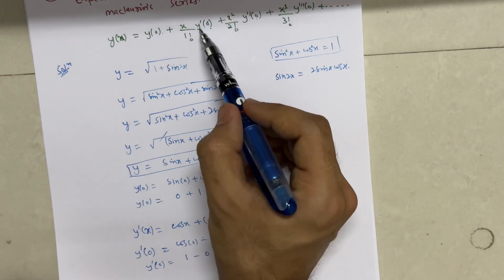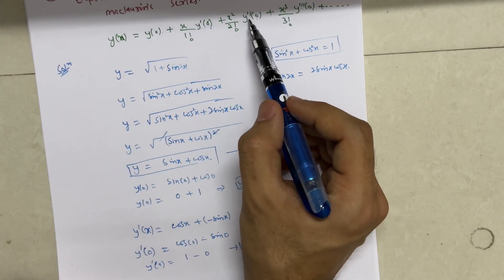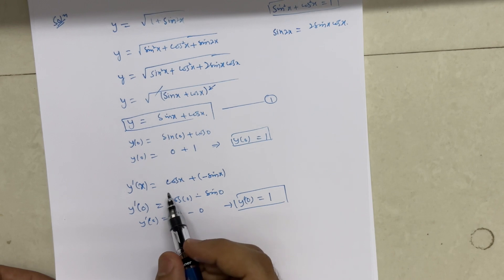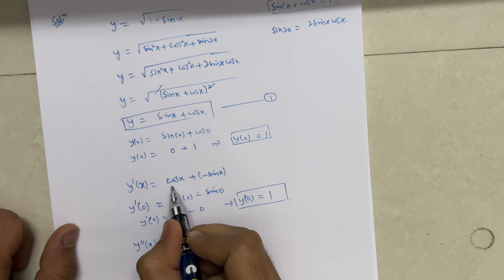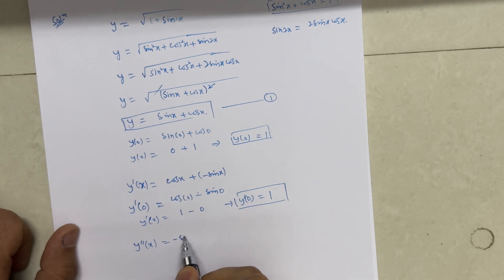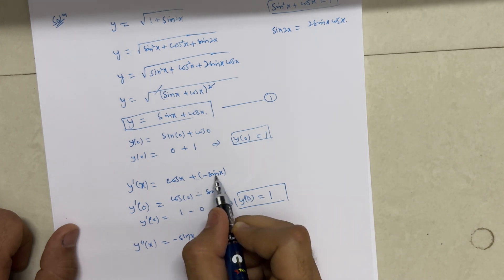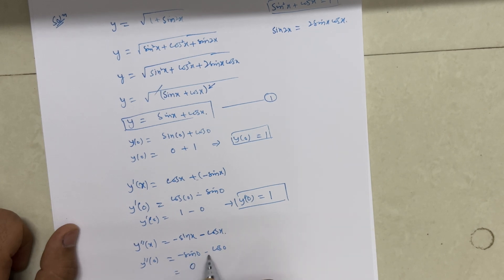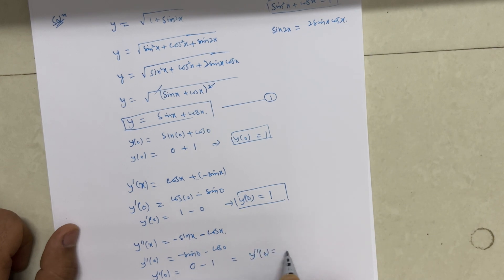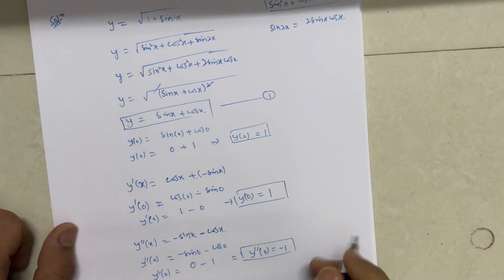Now we need y''(0). Differentiating y'(x) = cos x − sin x gives y''(x) = −sin x − cos x. Substituting x = 0: y''(0) = −sin 0 − cos 0 = 0 − 1 = −1. So y''(0) = −1.